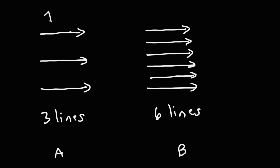If the electric field on the left has a value of 1E, on the right it's going to be twice as strong, because you have twice the number of lines in the same region of space, so the density is twice as much. The closer the lines are together, the stronger the electric field.